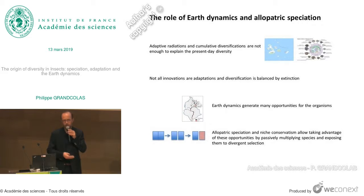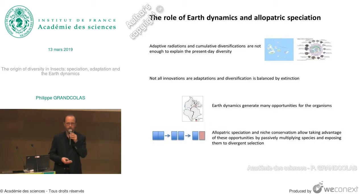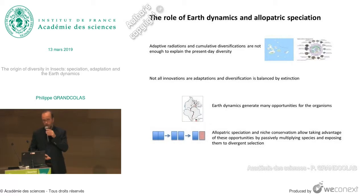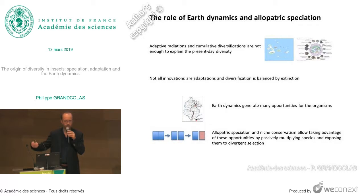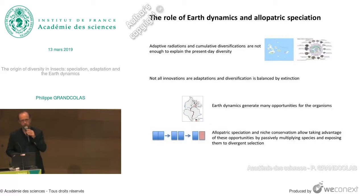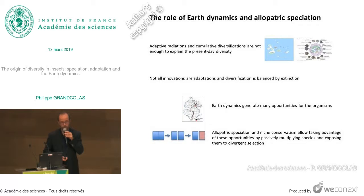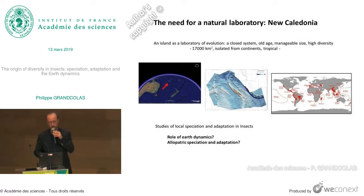We need to have this complete picture to understand the evolution of groups, and also to consider that the multiplication of species — the diversification of groups — has taken place by a mechanism that is well known now, whose name is speciation. But speciation is not unrelated to geography. On the contrary, speciation is mainly mediated by the division of the distribution areas of a species, which allows them secondarily to be affected by divergent selection and to diversify.